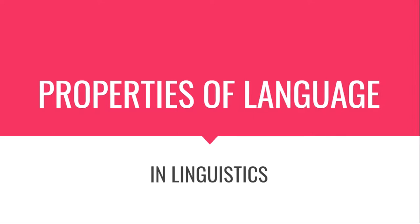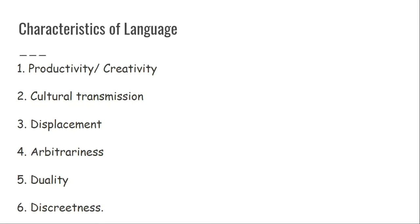If you look at the properties or characteristics of language, there are vast differences in human language. Human language is very unique. So if you look at the components, the language is very unique. The six components are: productivity or creativity, cultural transmission, displacement, arbitrariness, duality, and discreteness. In these six components, the language is very unique.